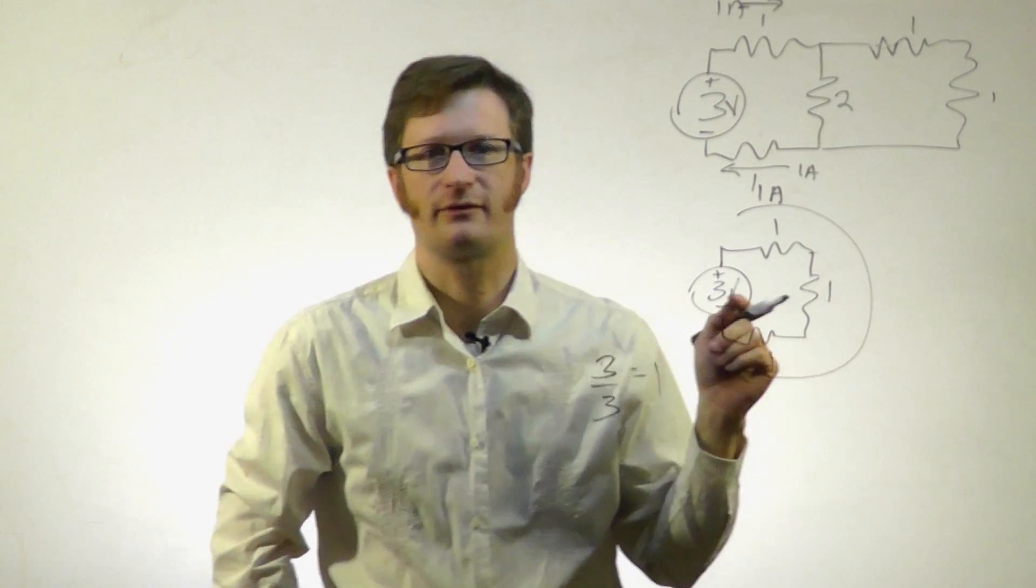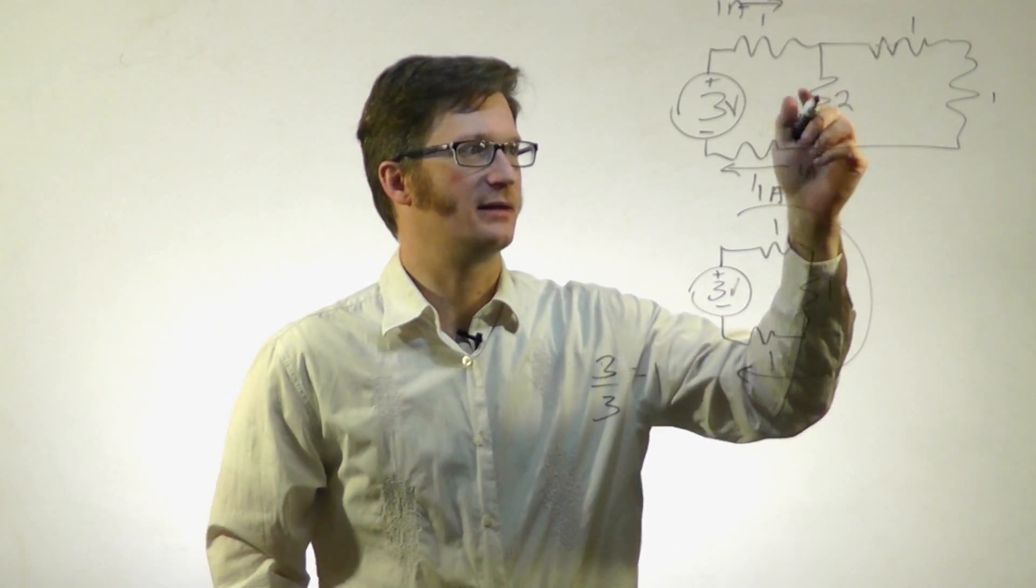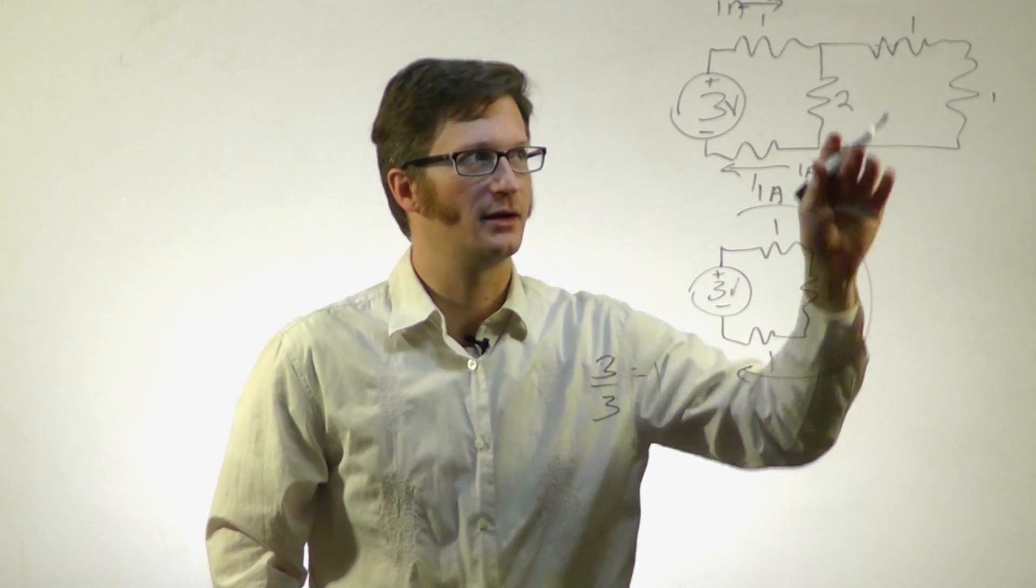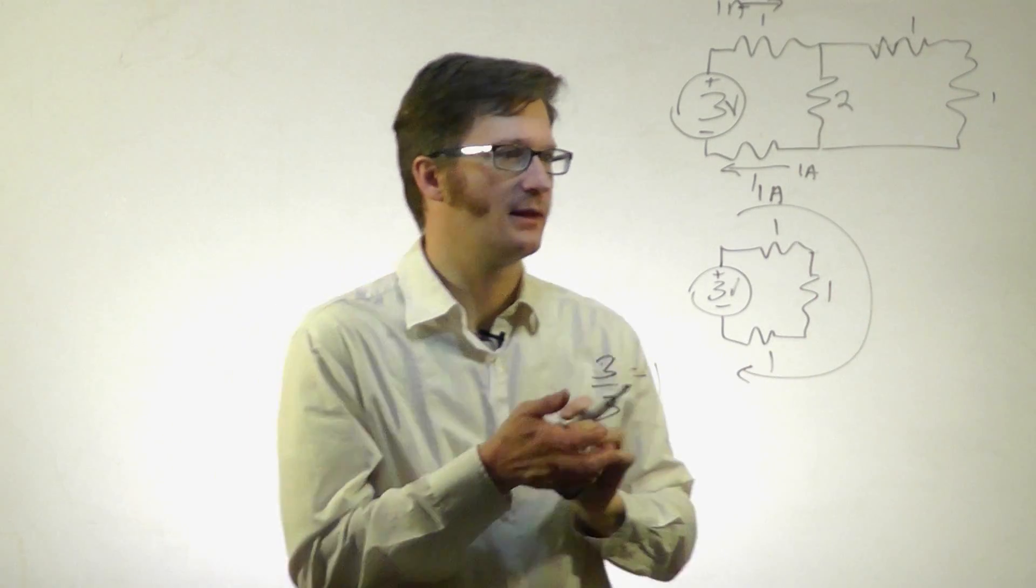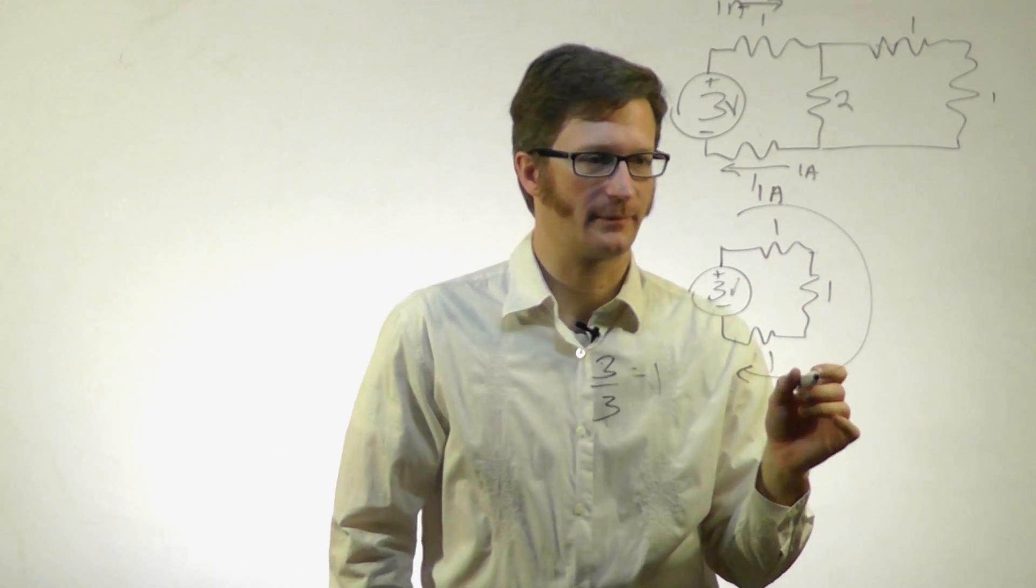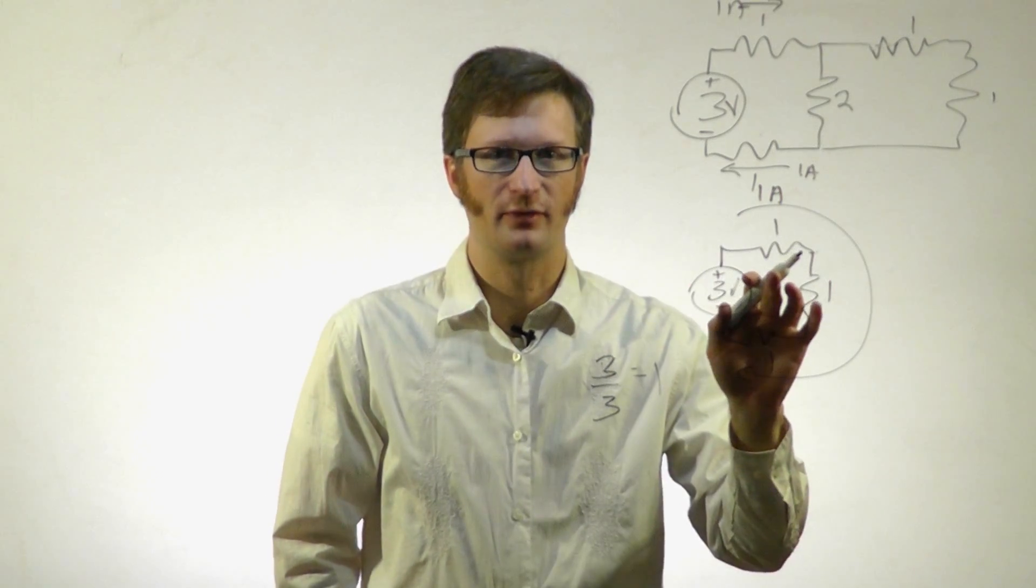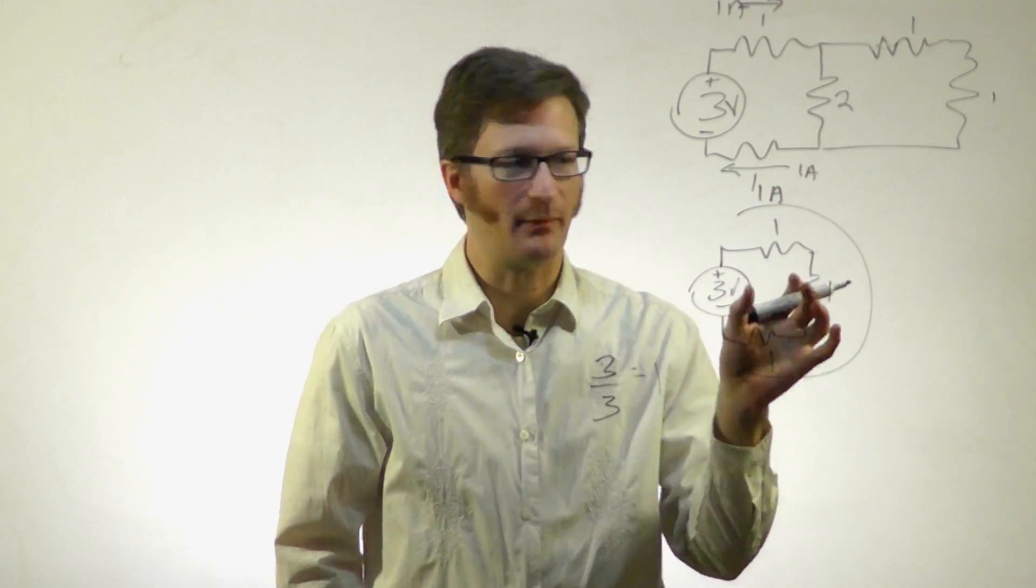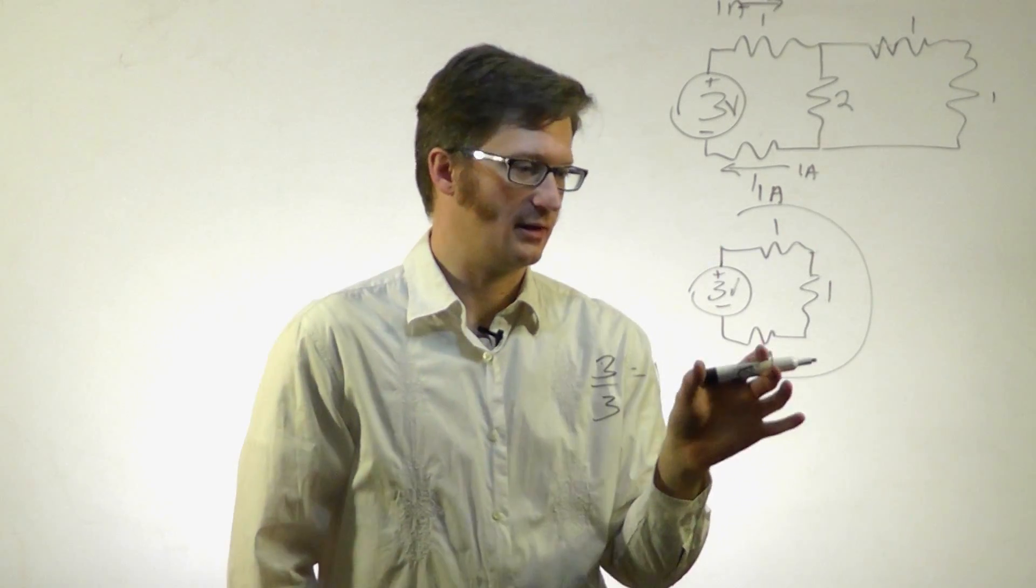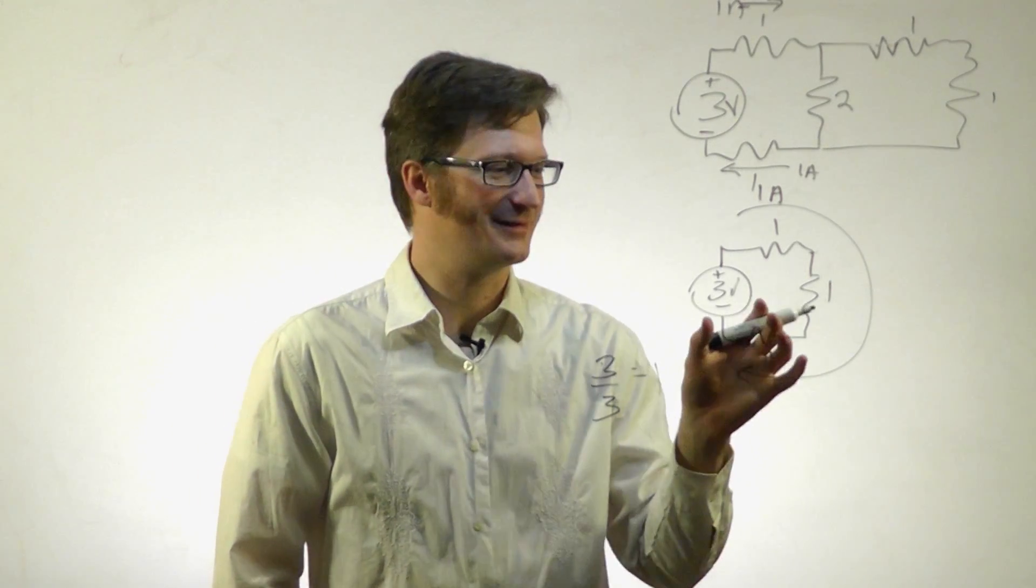And 1 amp going through there. You can think of current kind of like water - it will take every path it can possibly take. So you don't have a full amp going through here or here, it's split amongst them. If I have 1 amp flowing through a 1 ohm resistor, that means I have a voltage drop here of 1 volt. See why I picked these simple numbers? It makes standing up here and talking much easier.